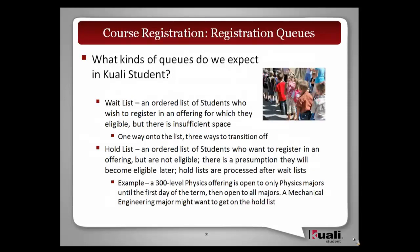Bob introduced the concept of registration queues earlier. The wait list is an ordered list of students who wish to register in an offering for which they're eligible but for which there's not enough space. Many of our institutions don't have wait lists yet and anxiously await this capability. There's one way onto the list: when you're trying to register and there's no space, you go in and get on the wait list. Transitions off may be automated — when space opens up and you're first on the list you automatically go in — or done manually, or somewhere in between.